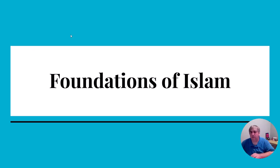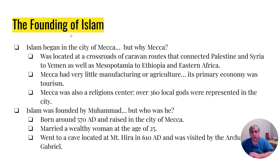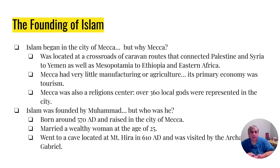Islam is based in Africa and is going to become one of the major religions of the world. Islam is founded in the city of Mecca. Mecca was a crossroads of different trading routes, so a lot of people went through it — thousands of different people and hundreds of different religions were represented there. The idea of tourism is what kept Mecca going, making it not just a center of trade but a center of religion too.